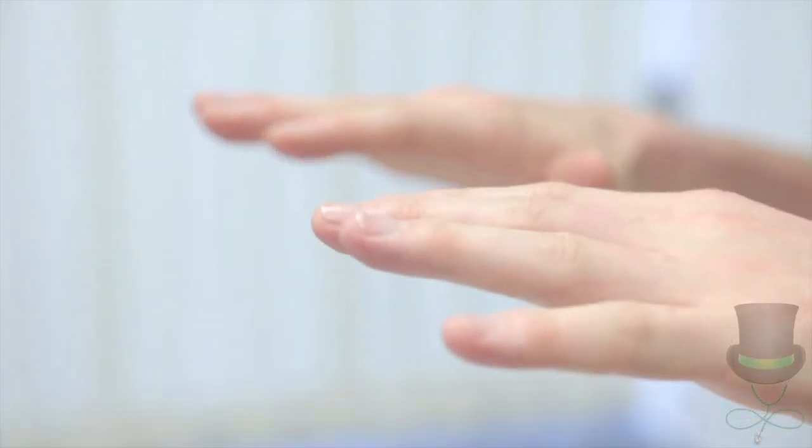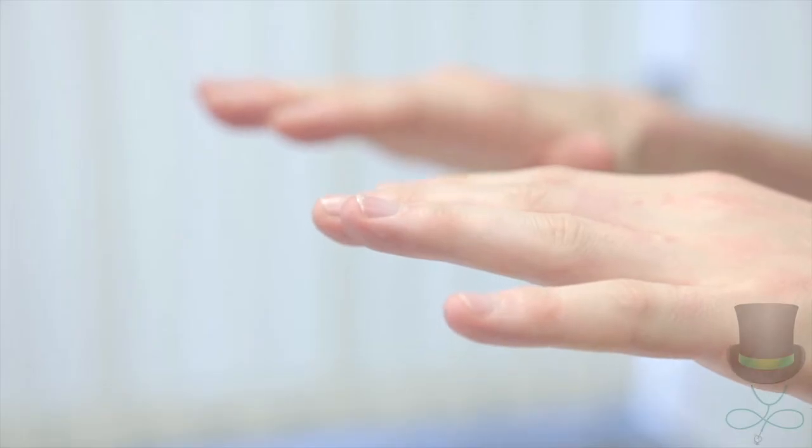Ask the patient to put their arms out straight. Look for a fine tremor in the hands, which is a sign of overuse of beta-2 agonists.